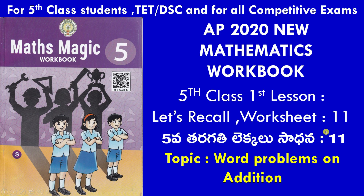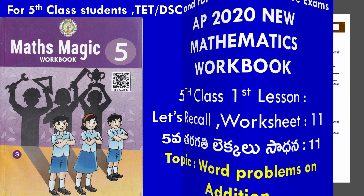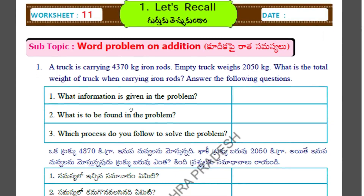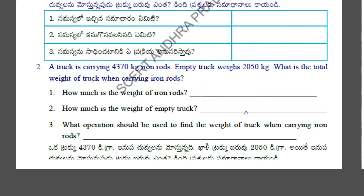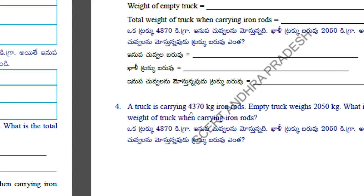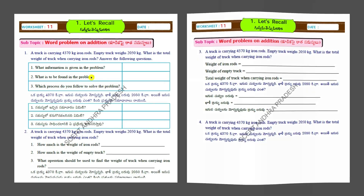Let's recall Worksheet Number 11. This is the topic of word problems on addition. These are the worksheets. Here there are one, two, three, four sums. Four sums are there. Let us do the first one.